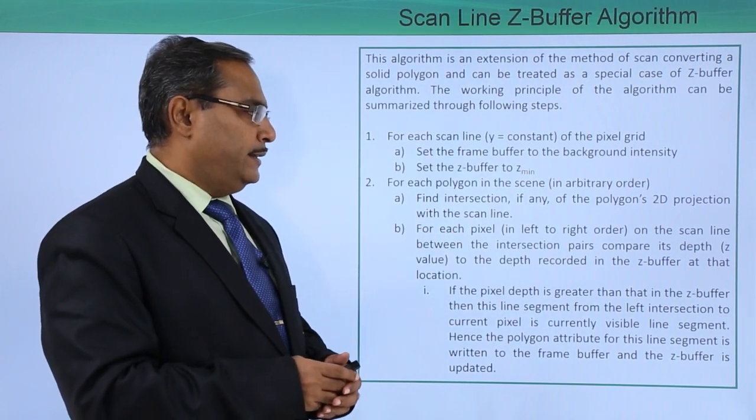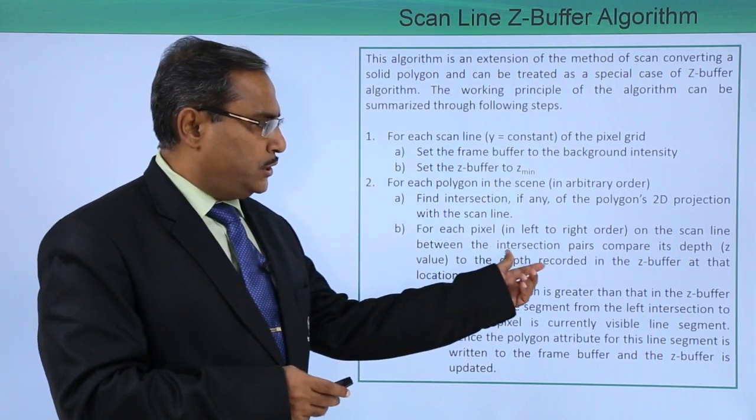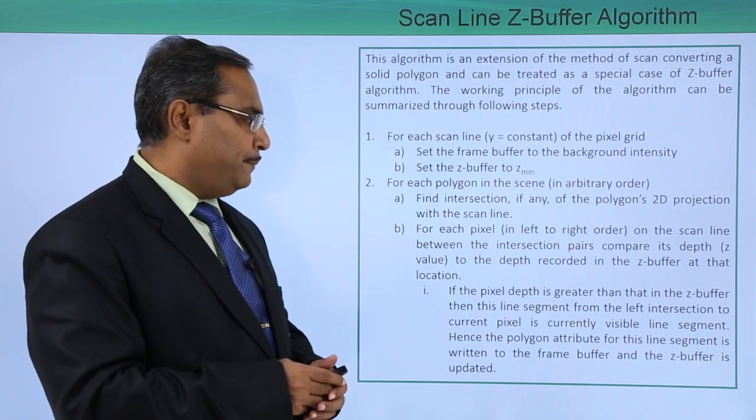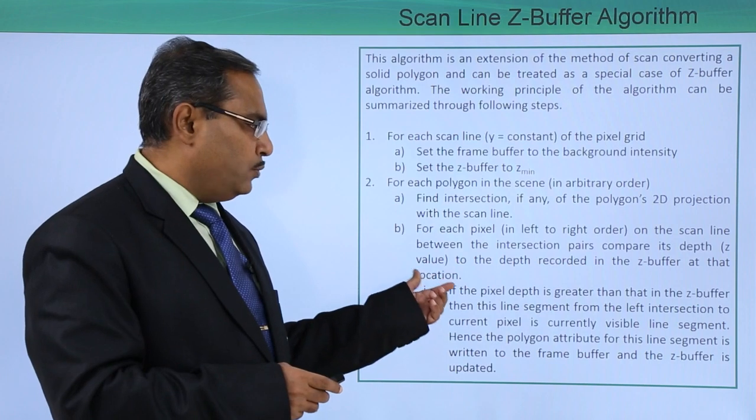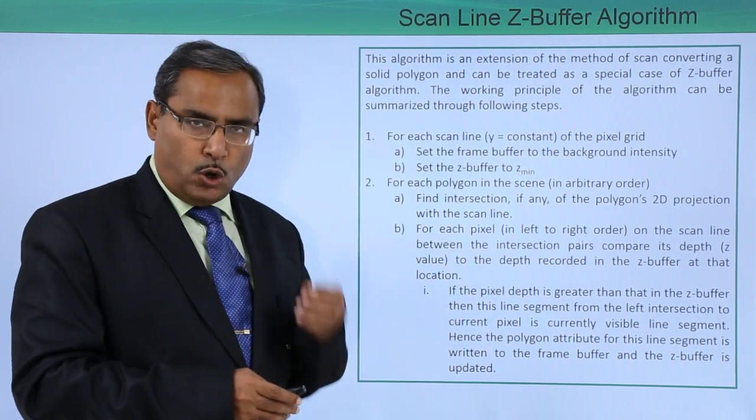For each pixel in left to right order on the scan line between the intersection pairs, compare its depth, that is the z value, to the depth recorded in the z-buffer at that very location.